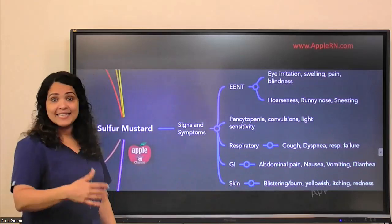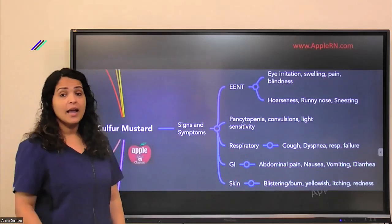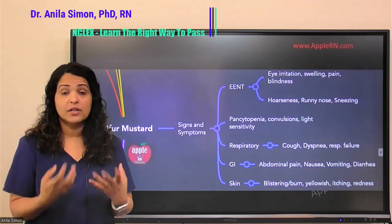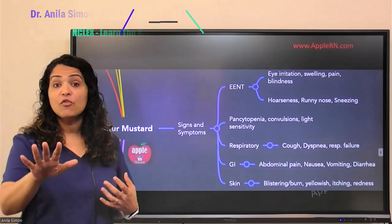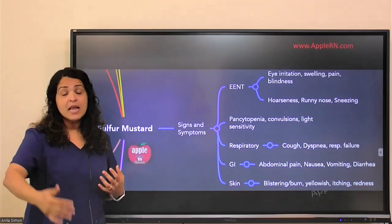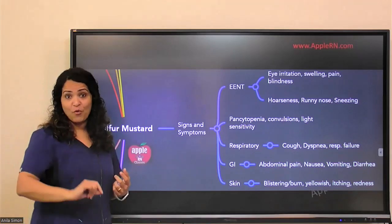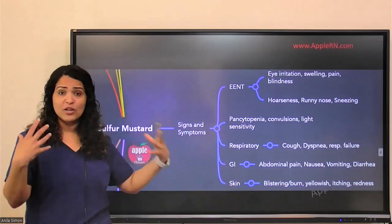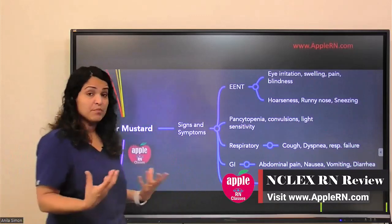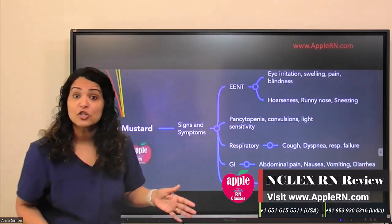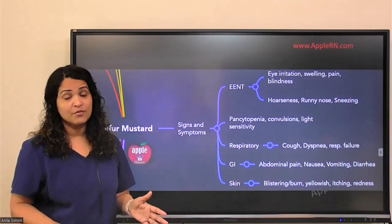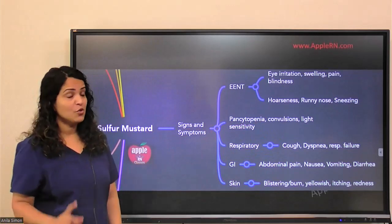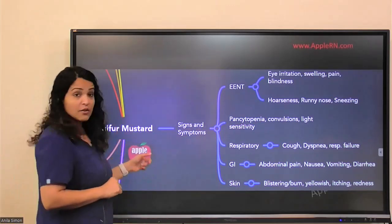If Sulphur Mustard is ingested, GI symptoms include abdominal pain, nausea, vomiting, and diarrhea. One very important point: if someone tells you they have ingested Sulphur Mustard, never induce vomiting, because it might make things even worse. For the skin, there may be blistering — like second-degree or third-degree burns — because they are cytotoxic and very damaging to cells. You may also see yellowish discoloration, itching, and redness.